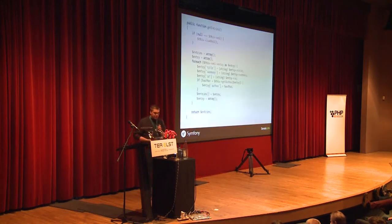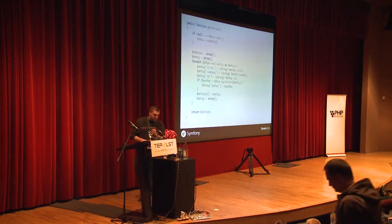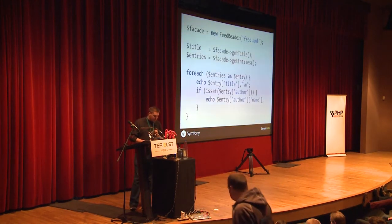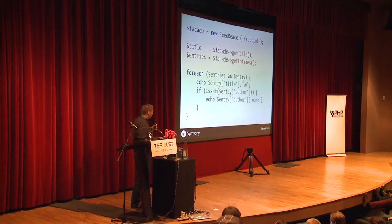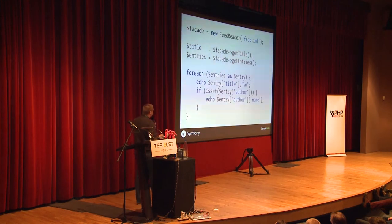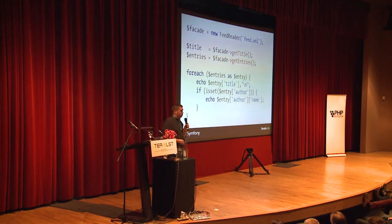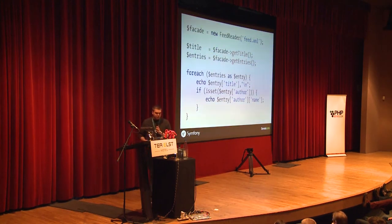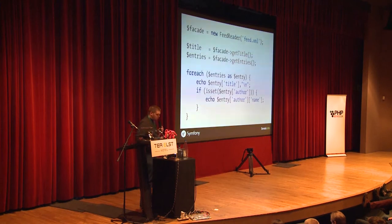Using the Facade, you simply encapsulate this complex logic into an object and expose a very simple API. You create a class and all your complex logic is encapsulated into methods. In your client code, you just use your FeedReader object and a simple API to fetch information from the XML. There's no complex logic in this code anymore — that's basically the Facade pattern.